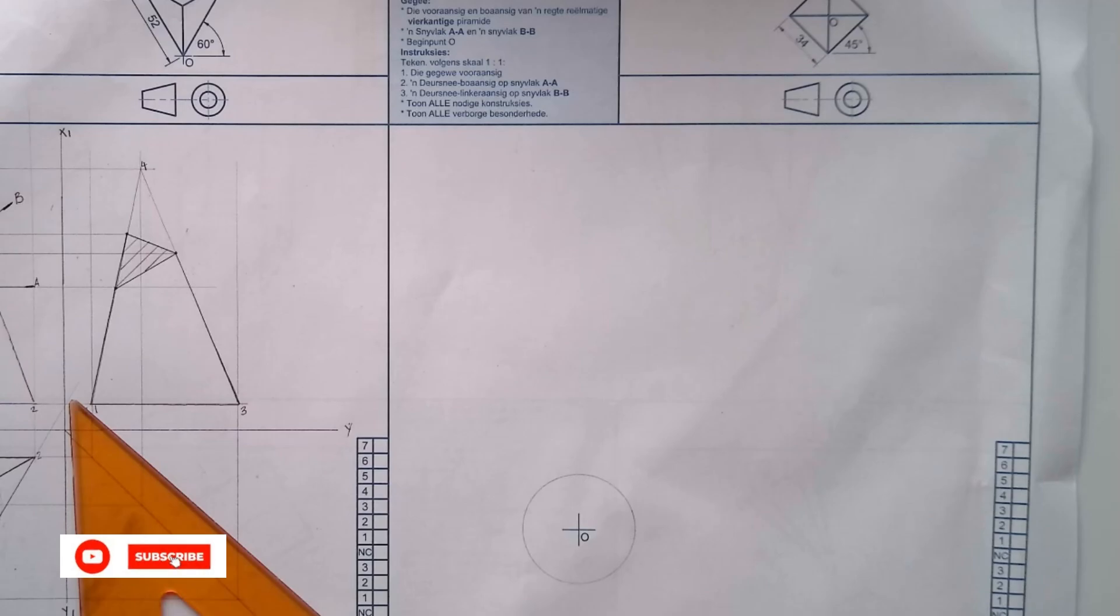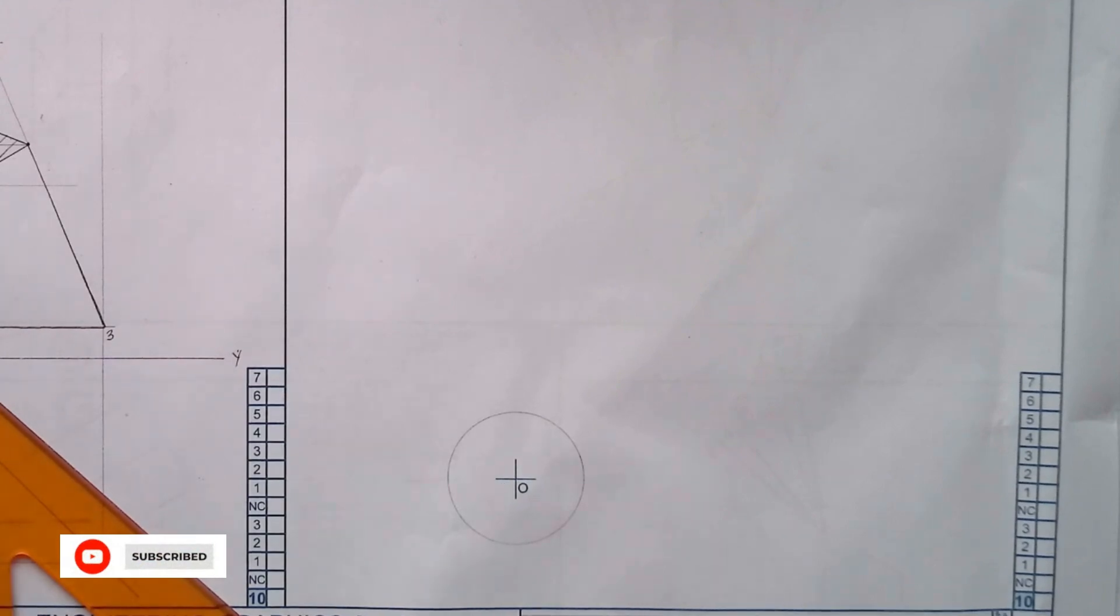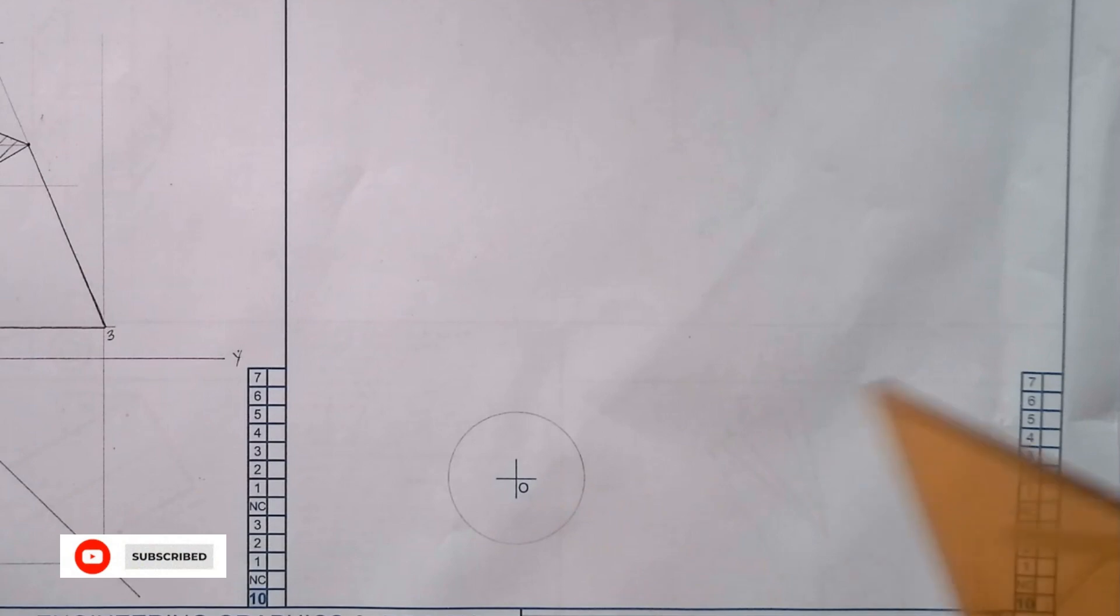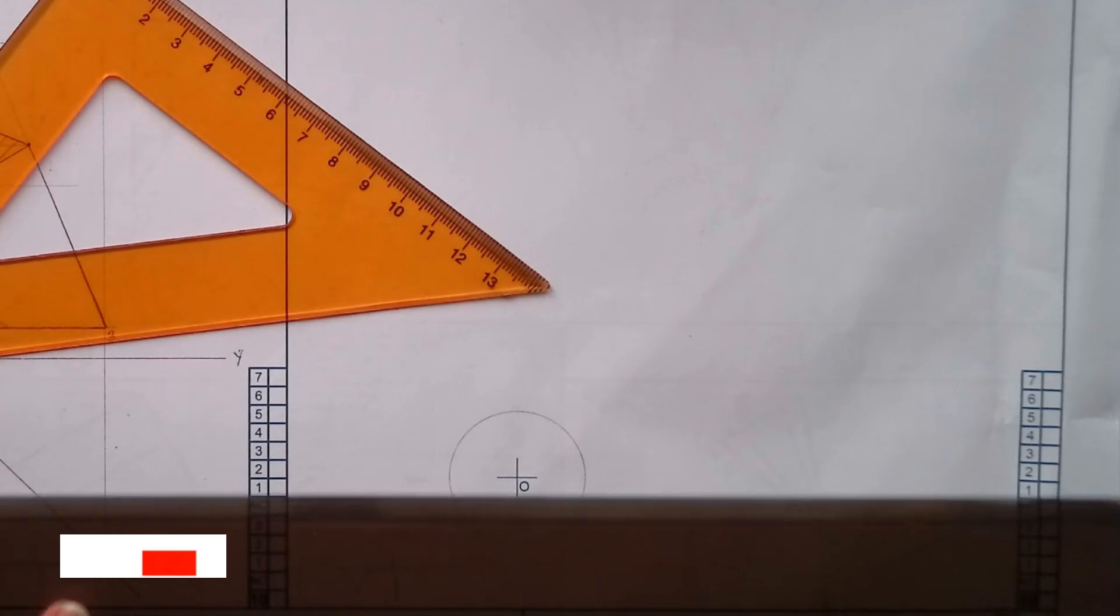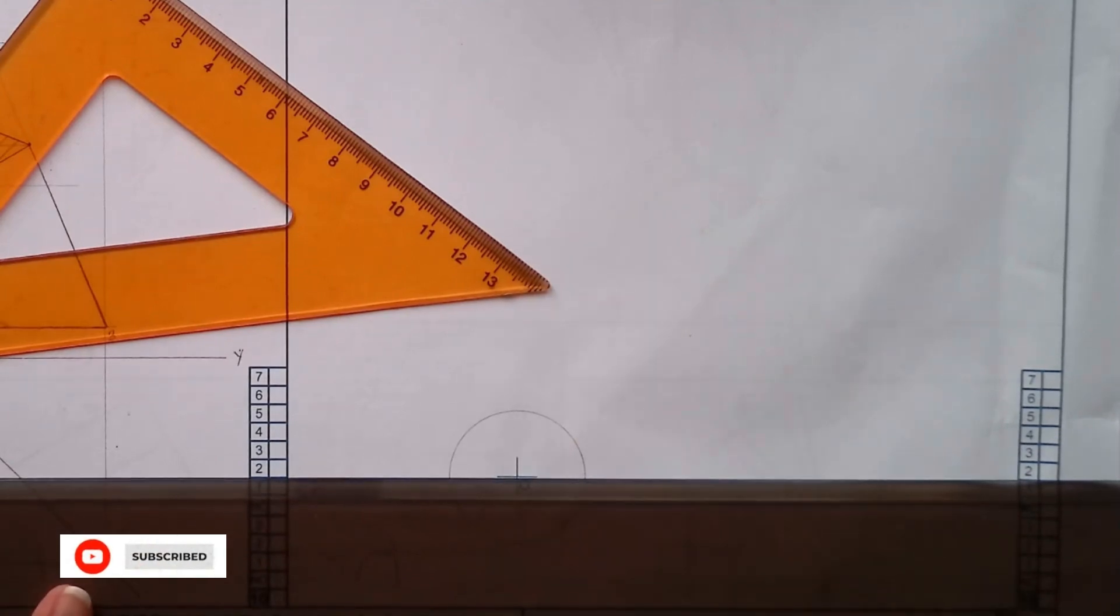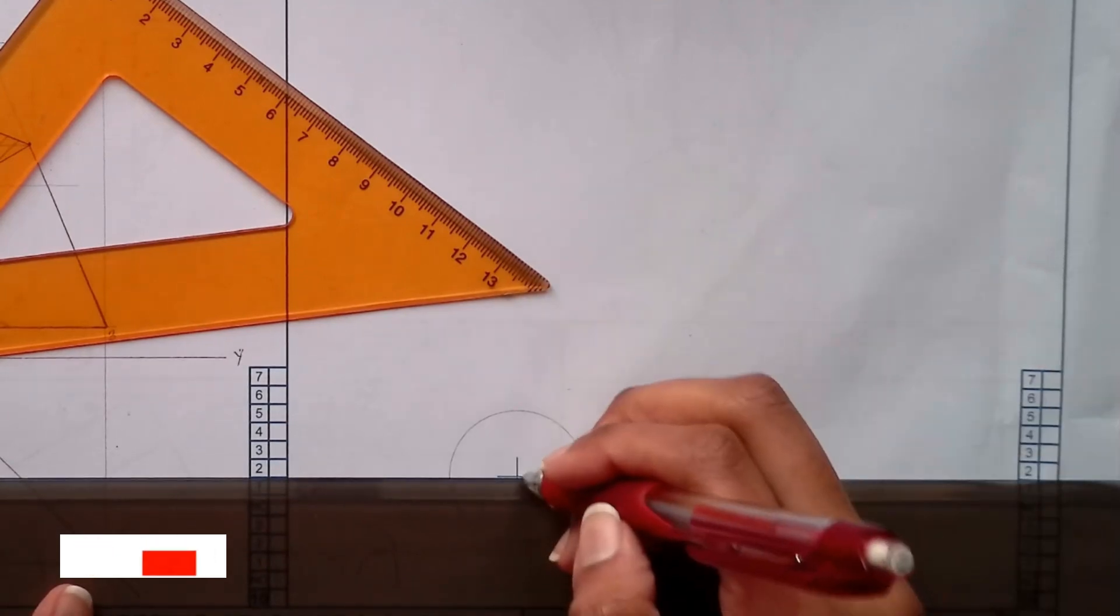Let me just zoom in. And then you will take your 45 degrees set square. Let's just extend these lines.